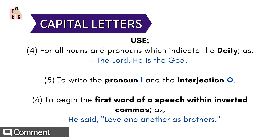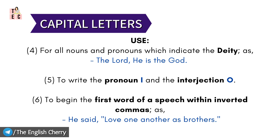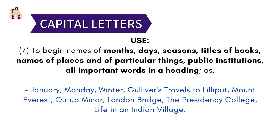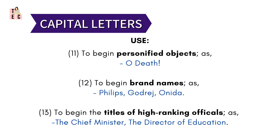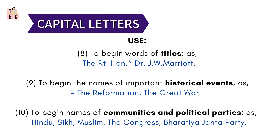To write the pronoun I and the interjection O, we write them in capital letters. Capital letters are also used to begin the first word of speech within inverted commas — like: 'He said, "Love one another as brother."' Notice the L of Love is capital. The names of months, days, seasons, titles of books, names of places, public institutions, and all important words in headings use capital letters. Even the names of communities, political parties, historical events, brand names, and high-ranking officials are denoted with capital letters.